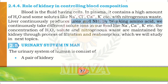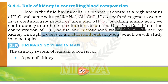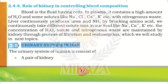We continuously take in different solute ions from food, like sodium ions, calcium ions, and potassium ions. The concentration of water, solutes, and nitrogenous waste is maintained by the kidney. The main function of the kidney is to maintain the level of water, solutes, and nitrogenous waste. This process is part of the urinary system.